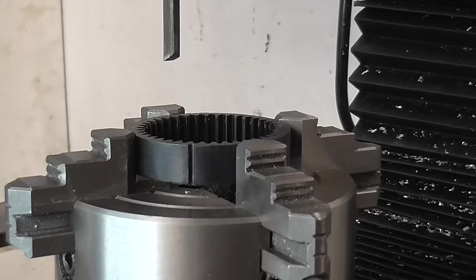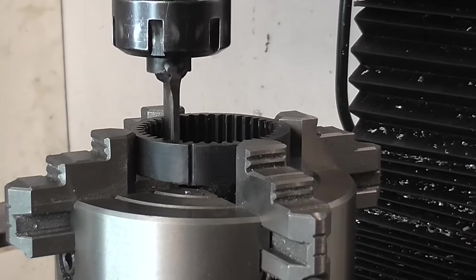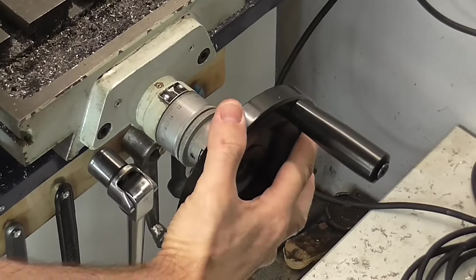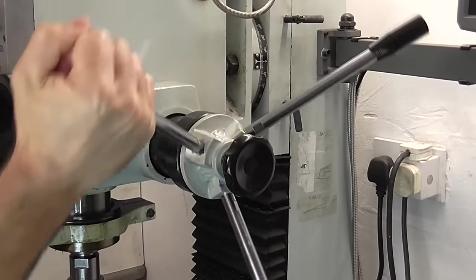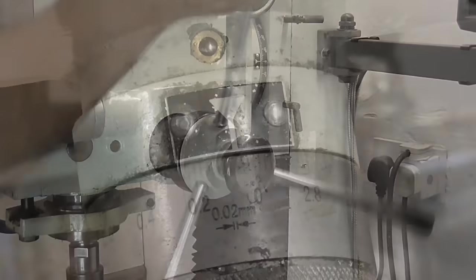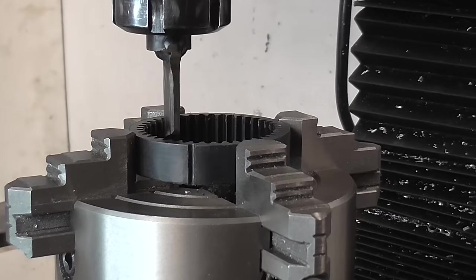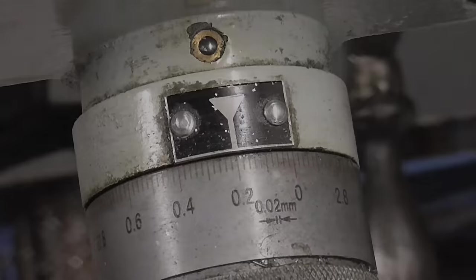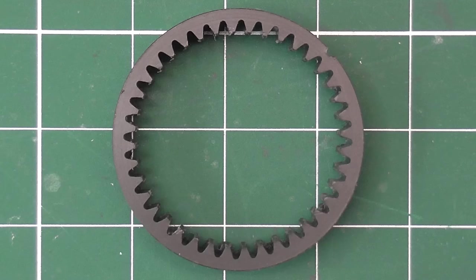Internal gears can be cut manually on a milling machine using the broaching technique. But it's a very tedious process. That's how I made this one.